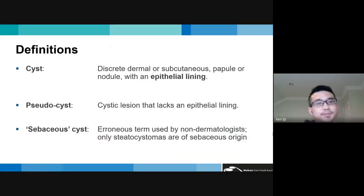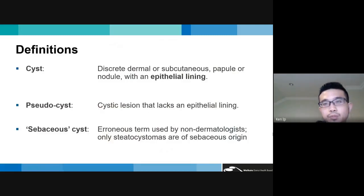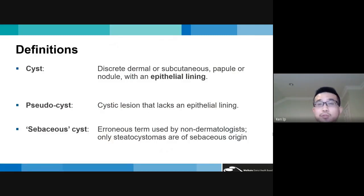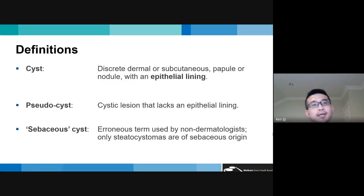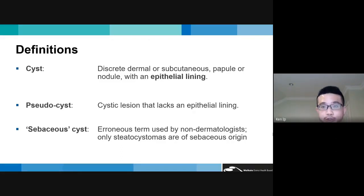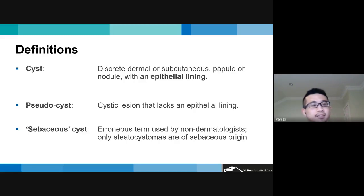A cyst is a discrete dermal or subcutaneous, usually papular or nodular structure, usually fluid-filled, and strictly speaking they have an epithelial lining to be considered a true cyst. By comparison, a pseudocyst has a similar cystic structure but one that lacks an epithelial lining.